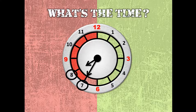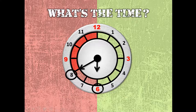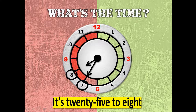How about if the short hand strikes at number 8 and the long hand strikes at number 7? What's the time? The time is: it's twenty-five to eight. Twenty-five to eight. Why twenty-five? Because five, ten, fifteen, twenty, twenty-five, thirty — number 7 is thirty-five. And the short hand strikes at number 8. So twenty-five to eight.